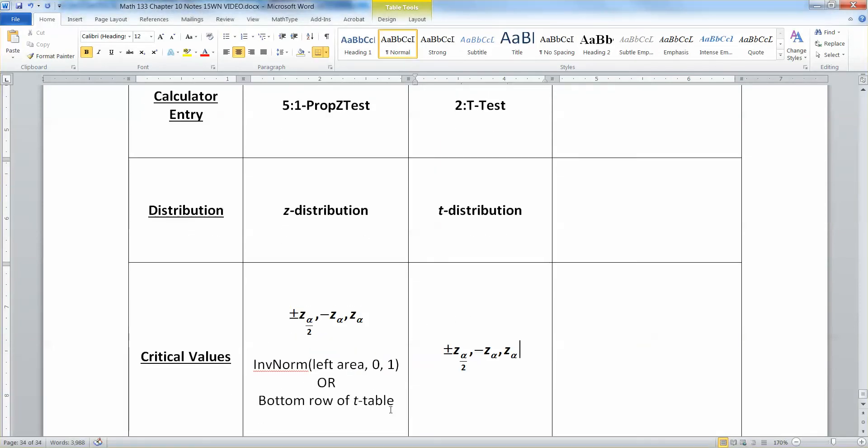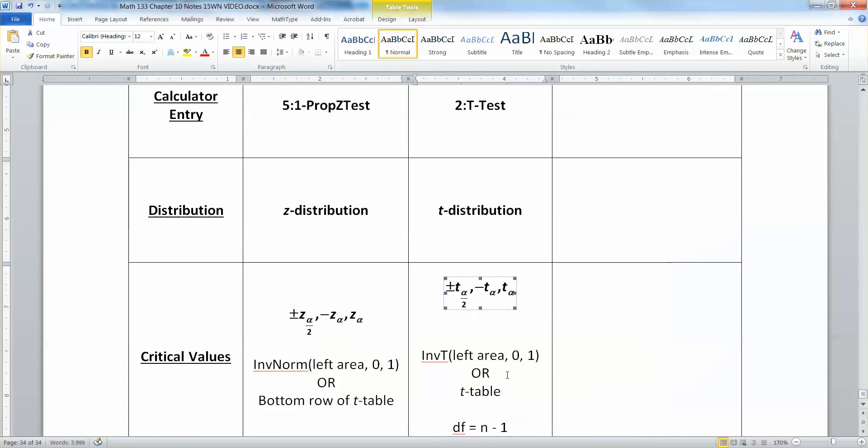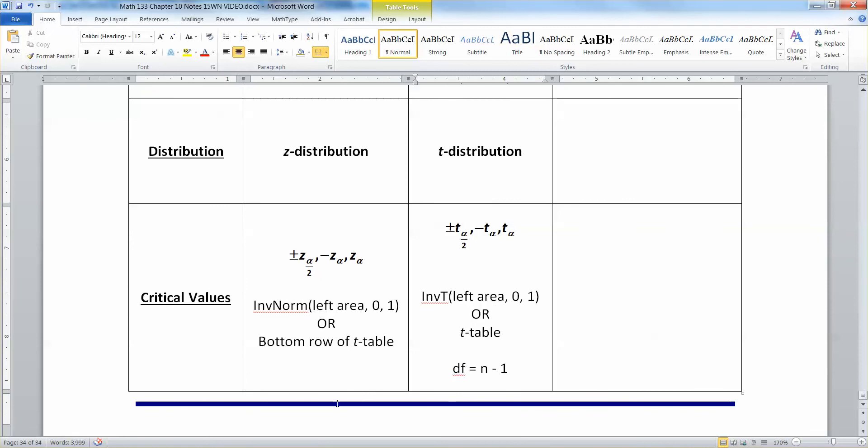So if you look at the critical values, right here, it's saying it's the t distribution, and it's either plus or minus t alpha over 2, negative t alpha, or positive t alpha for your critical values. So let me grab those. Now, where do we get those from? Well, you can use inverse t or the t table. It won't be the bottom row. It'll just be the t table. So inverse t or the t table in general with degrees of freedom equals n minus 1, right? These would be t's, not z's. So these two are for our two-tailed test. This one's for our left-tailed test. And positive t alpha is for our right-tailed test.